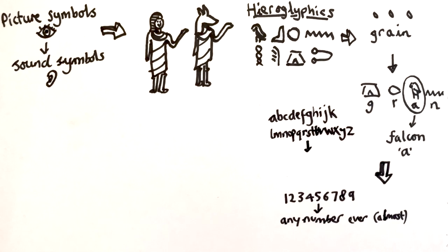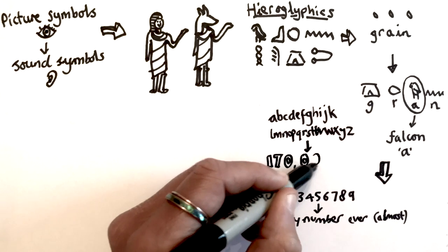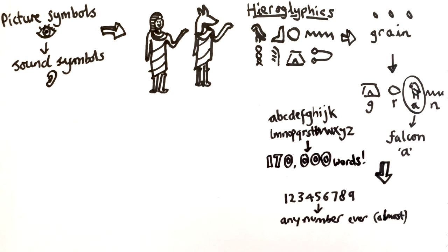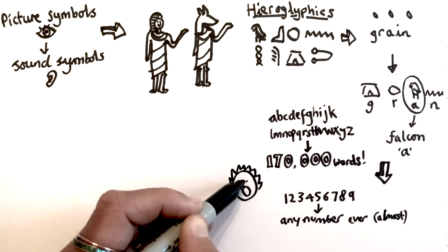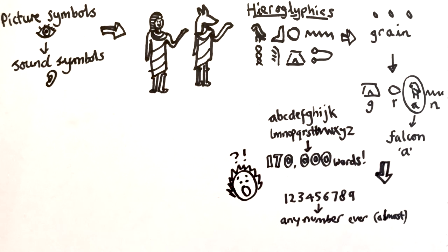There are over 170,000 words in English today, and we can make all of them with just our 26 letters. Imagine if we had to remember 170,000 picture symbols to go with each word instead. Learning to read and write would be a lot trickier.